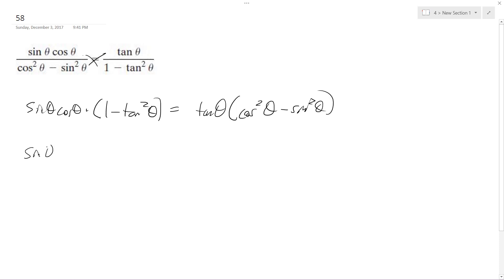breaking these down, it's sine theta cosine theta minus sine theta cosine theta times sine squared theta over cosine squared theta. It's equal